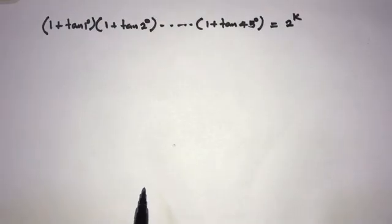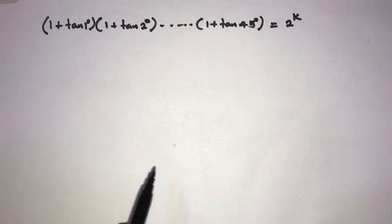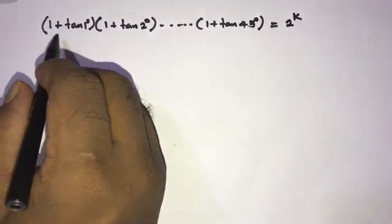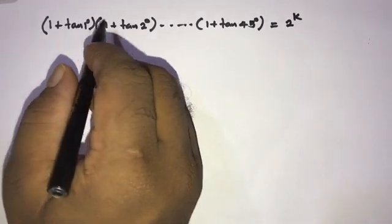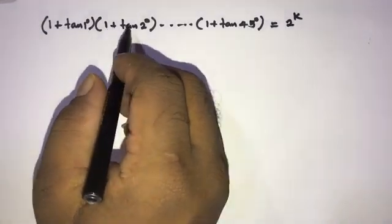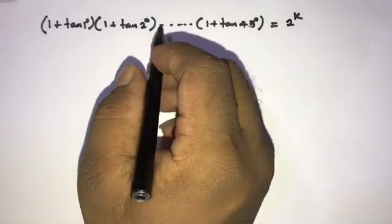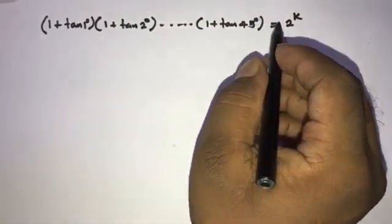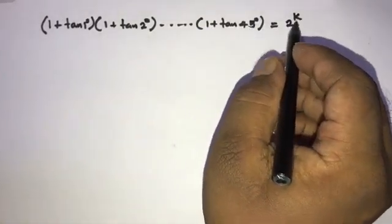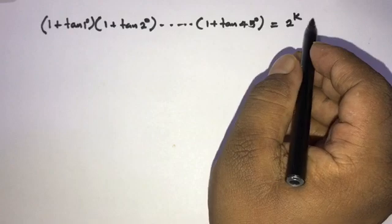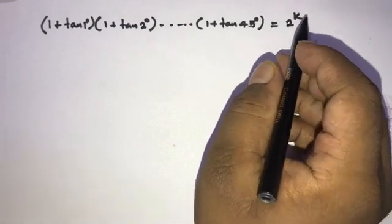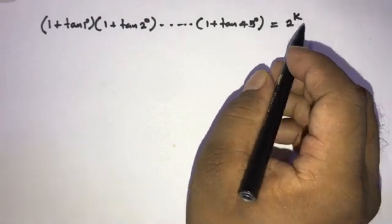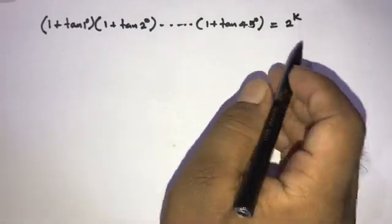Welcome to the Mathematics Image channel. Today we are going to discuss a trigonometric question. The question is: (1 + tan1)(1 + tan2)...(1 + tan45) = 2^k. We need to find k.